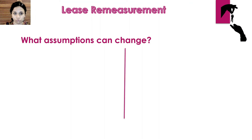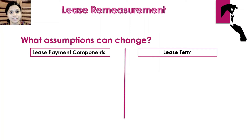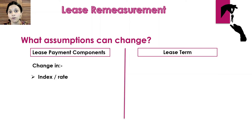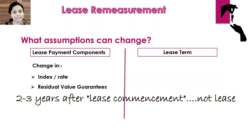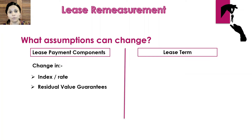I have subdivided all the assumptions into two categories. The first one is changes in the lease payment components and the second one is changes in the lease term. Now what are the components of a lease payment? One is fixed payments — fixed payments would not change, they stay constant throughout the lease term. What can change are the variable payments, because there may be a change in the index or rate on which the variable payment depends. The second thing is if the lessor and lessee agree that contrary to their previous expectation, an asset will actually be obsolete at the end of the lease term — the residual value will be nil and the lease payment at the end of the term will reduce.